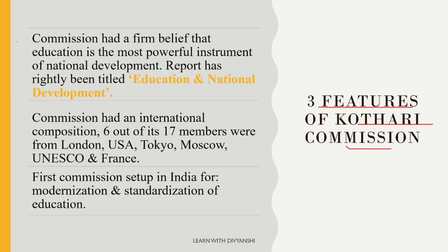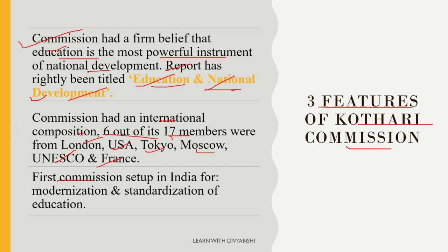There are three key features of Kothari Commission. First, the commission believed that education is the most powerful instrument for national development — 'Shiksha rashtra ke vikas ke liye sabse shaktishali sadhan hai' — and that is why the commission's report was named 'Education and National Development.' Second, the commission had an international composition: out of 17 members, 11 were Indians and 6 were foreigners — from London, USA, Tokyo, Moscow, UNESCO, and France. Third, it was the first commission set up in India for the modernization and standardization of education.